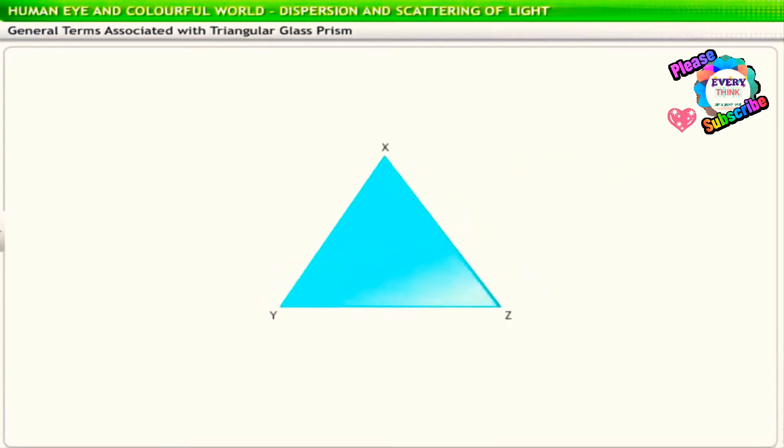The angle between the two refracting surfaces, denoted by the capital letter A, is called the angle of the prism or the refracting angle.